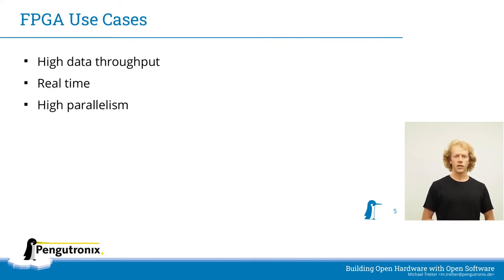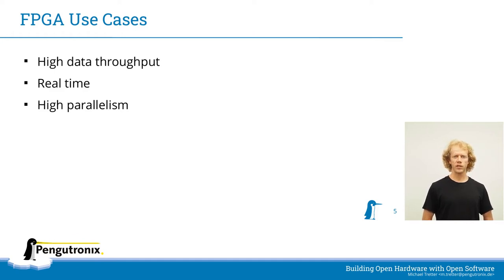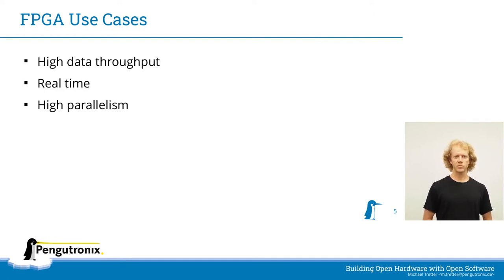Two: there are at least some real-time requirements on the system. For video data at 60fps, there is a deadline of 16ms for the processing of one video frame, since the next frame will arrive after 16ms. This is not a limit for the overall processing pipeline, but each processing step has to be reliably done during that time frame. Three: there is the possibility to capitalize on hardware parallelism, either by running the same task multiple times in parallel or by using a processing pipeline with multiple tasks on the same data.